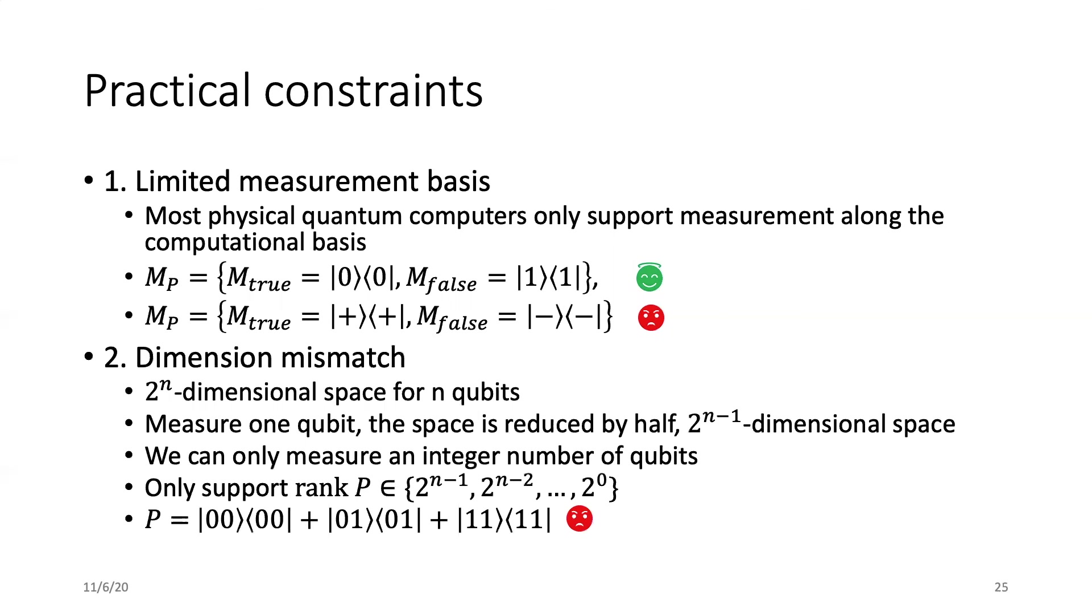Another constraint we call dimension mismatch. For n qubits, when we measure one qubit, the size of the space is reduced by half, and it becomes a 2^(n-1) dimensional space. In practice, we can only measure an integer number of qubits. So only projections with ranks of 2 to the power of an integer can be directly implemented. When the rank is not in this power set, for example, a projection with rank 3, it cannot be directly implemented.